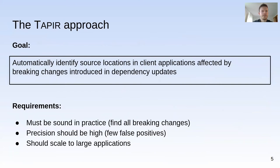We present a technique that helps application developers update dependencies in the presence of breaking changes. It automatically identifies the source locations in application code affected by breaking changes introduced in a dependency update. For such a technique to have practical value, it must adhere to a couple of properties. It must be practically sound — meaning that for real-world code it must detect all breaking changes. Even missing a single breaking change can have dire consequences. It must also be relatively precise, since if many false positives are produced, we are no better off than examining changelogs manually.